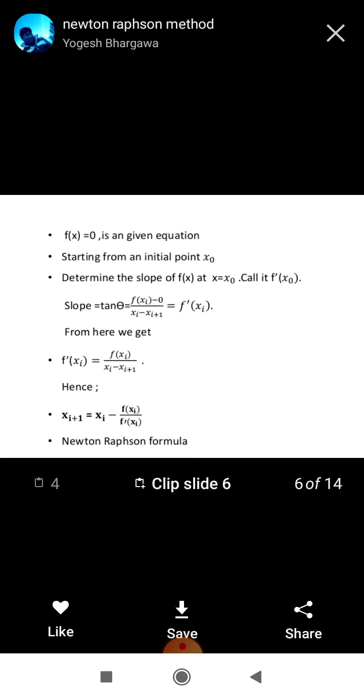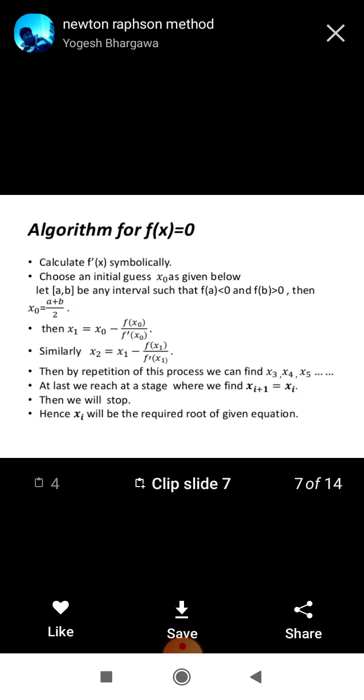With the help of this formula, we have successively reached to the final solution. So, algorithm of Newton-Raphson method is, if we have any equation fx equals 0, first of all, we have to calculate f prime x symbolically. Choose an initial guess x0 as given below. Let ab be any interval such that fa less than 0 and fb greater than 0. Then x0 equals a plus b upon 2.